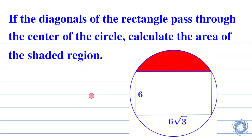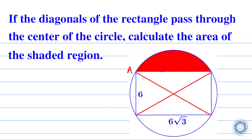Now let us draw the diagonals of this rectangle. Let us take the corners as A, B, C, and D. It is given that the diagonals of the rectangle pass through the center of the circle. Therefore, this point of intersection is the center of the circle, and let us take this point as O.